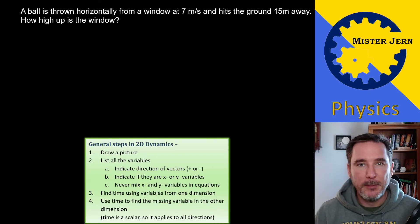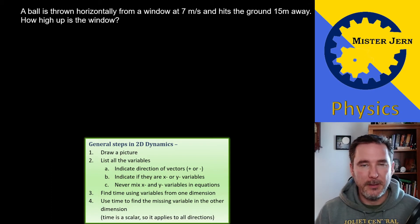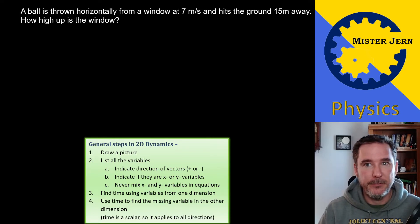A couple things about these types of problems: I've got my general steps to follow. I think they're pretty useful, and if you just follow them you should be fine with this stuff. Like with a lot of questions, it can be helpful to draw a picture. So we have a ball thrown horizontally from a window at 7 meters per second and it hits the ground 15 meters away. How high up is the window?